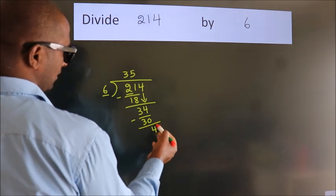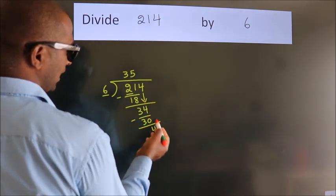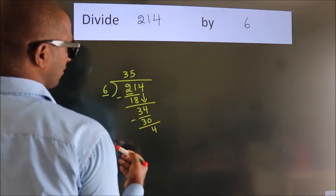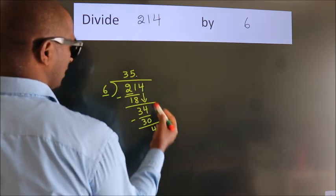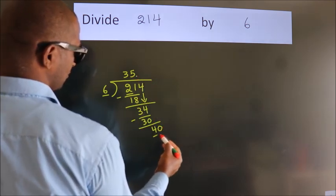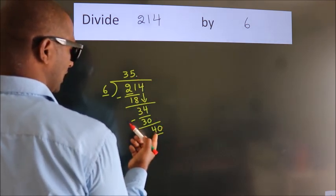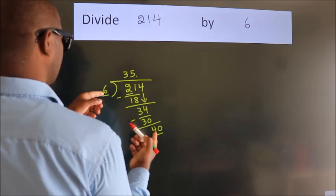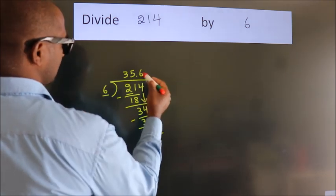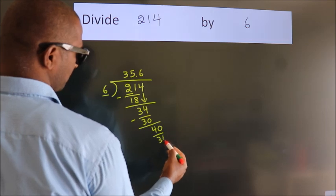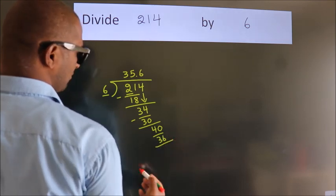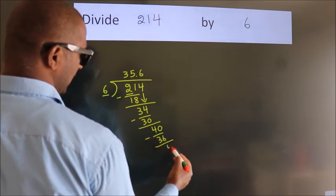After this, no more numbers to bring it down. So what we do is we put dot, take 0. So 40. A number close to 40 in the 6 table is 6 sixes 36. Now we subtract. We get 4.